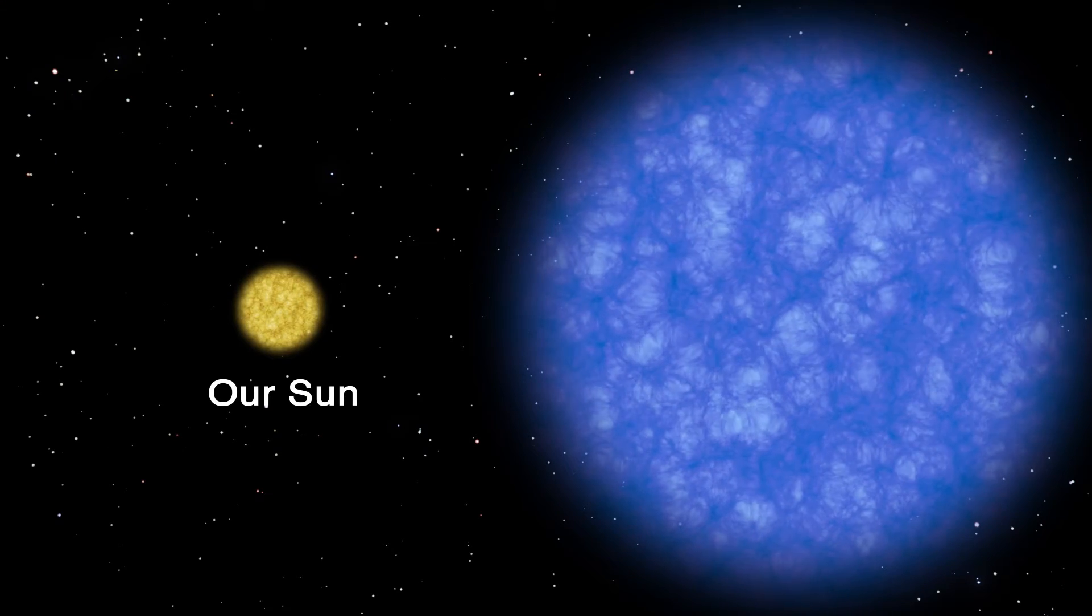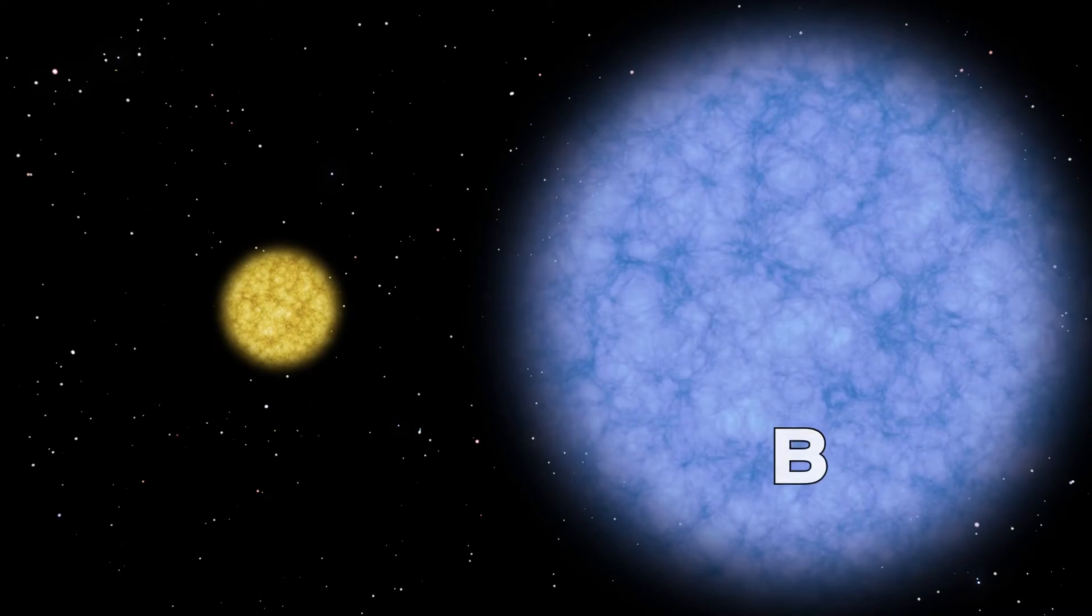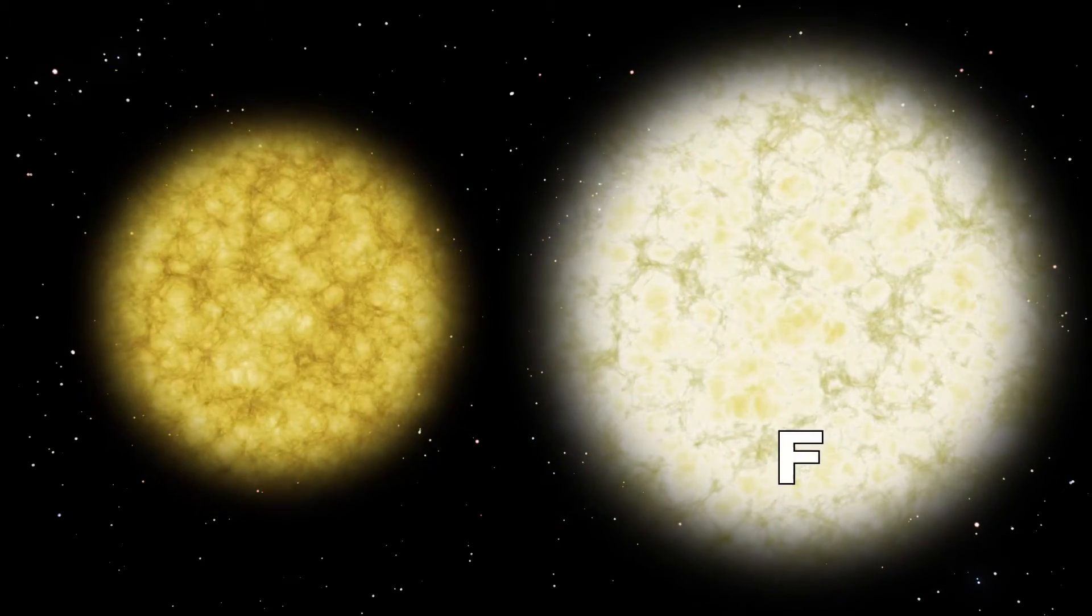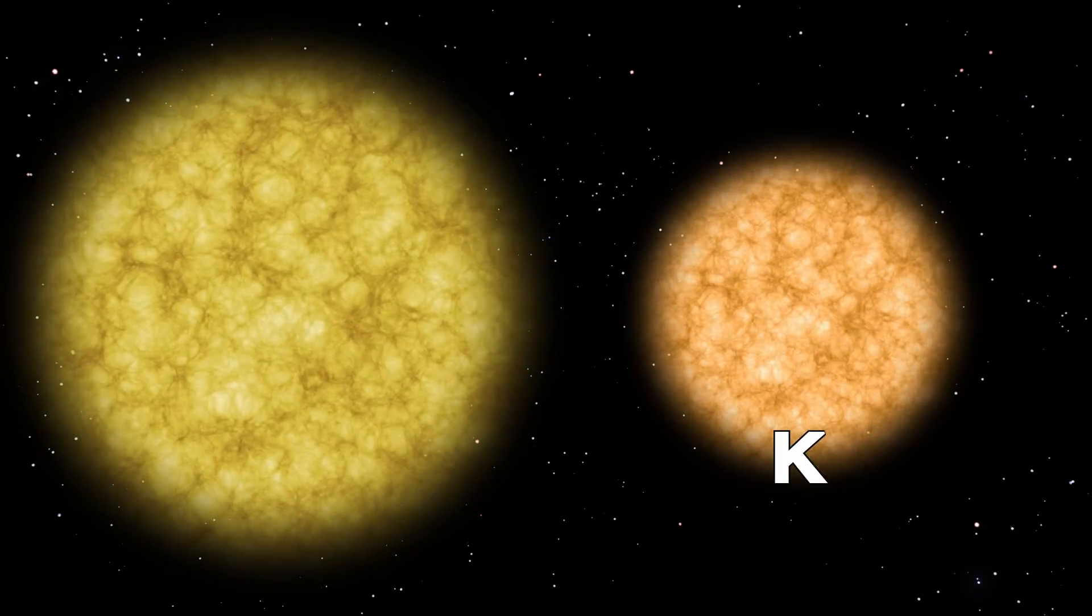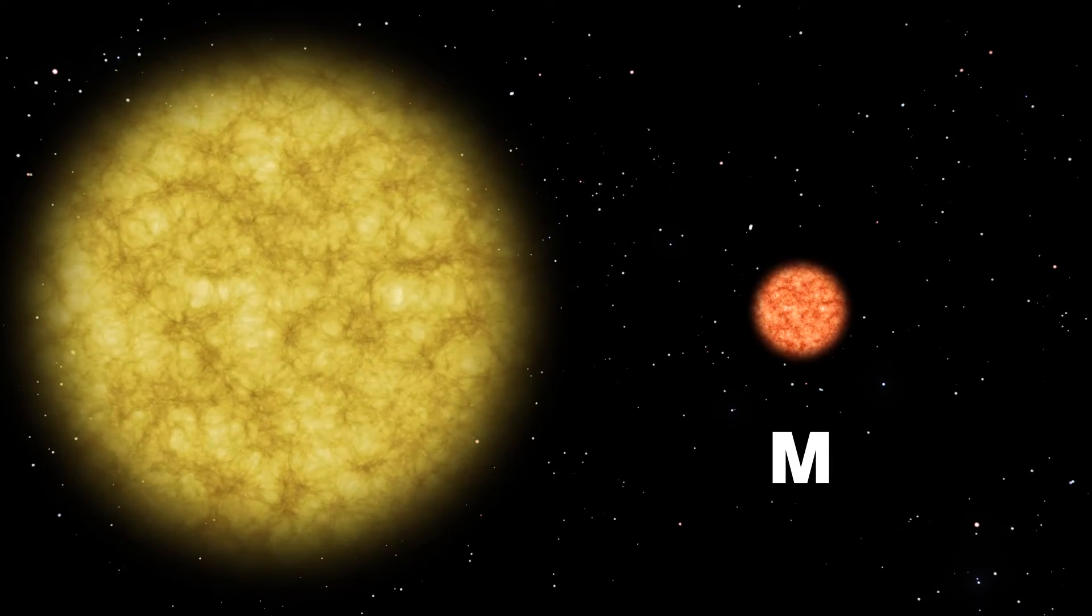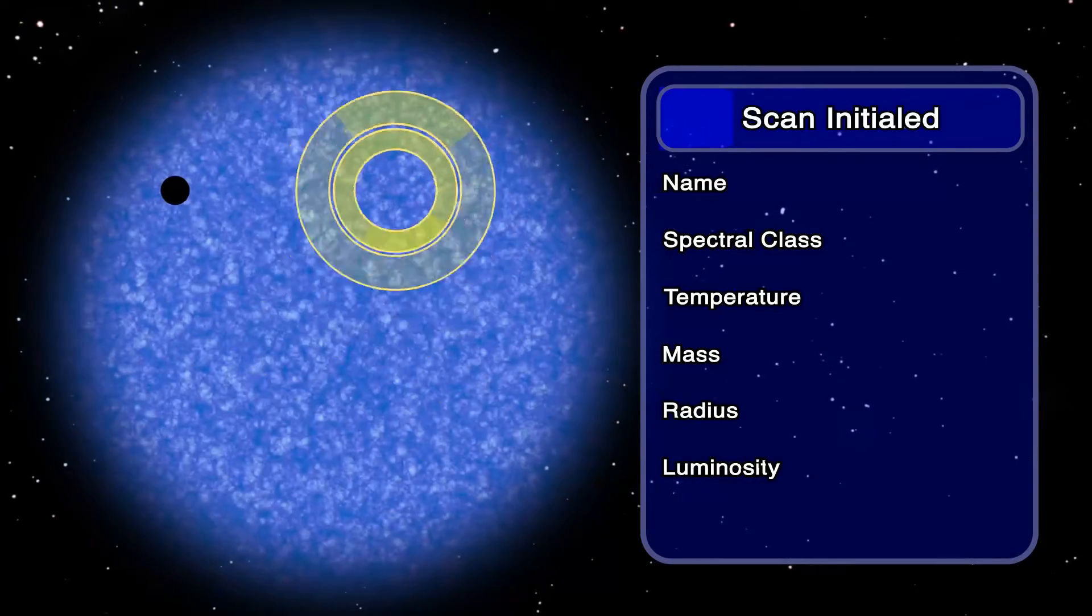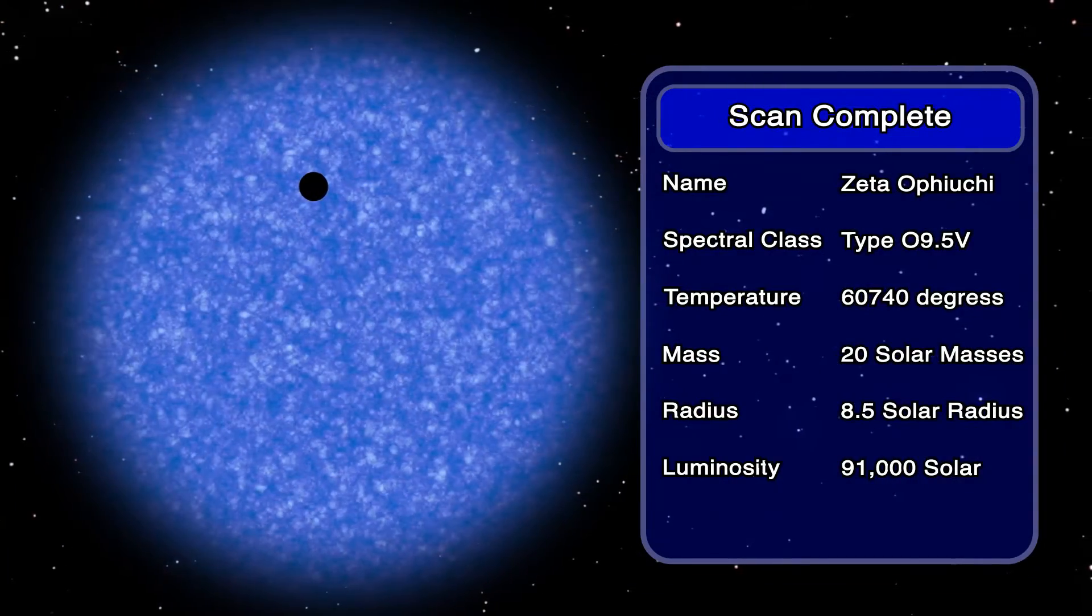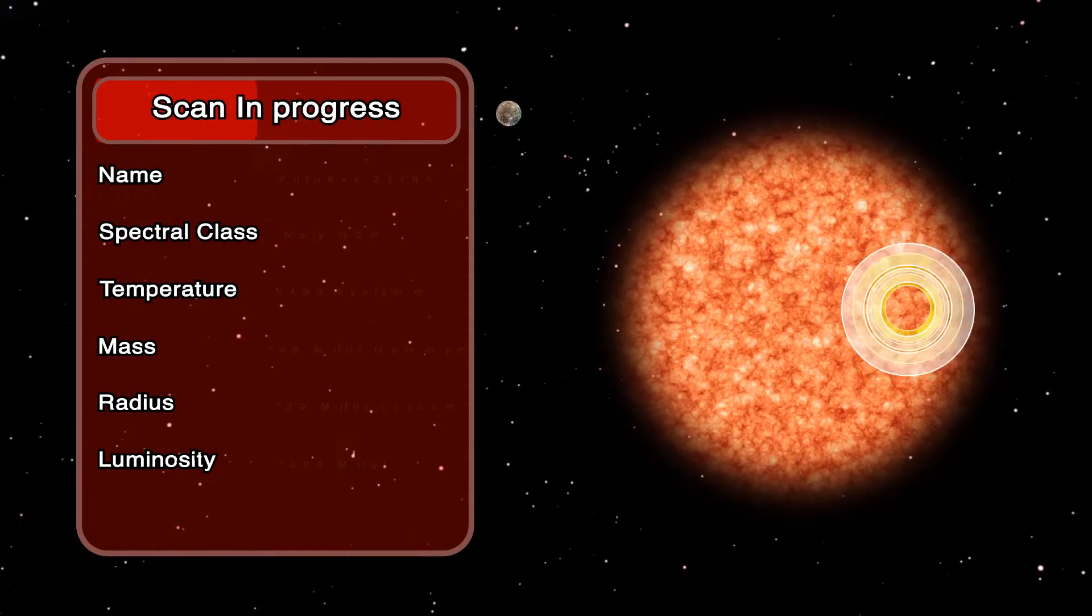There are seven spectral classes of stars: O, B, A, F, G, K, and M. O-class stars are extremely hot and bright, while M-class stars are cool and dim.